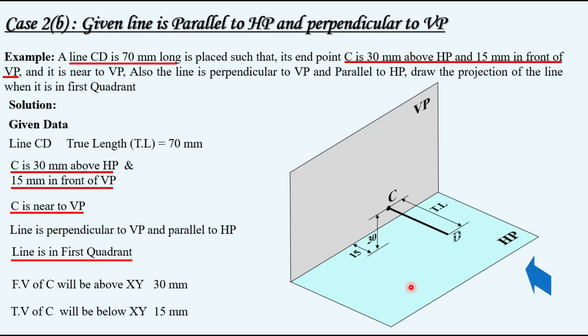Taking true length, you will get another end of the line, that is D. When you are looking from the front, both C and D, the projections will be coinciding on a single point on vertical plane and C dash D dash will be the corresponding front views.